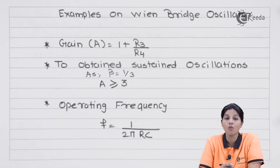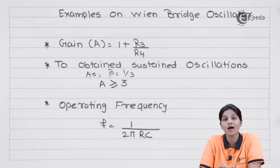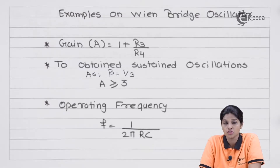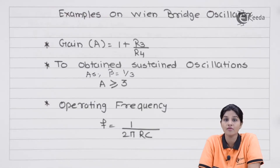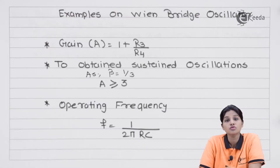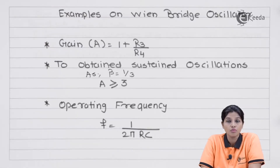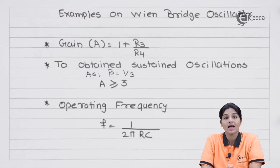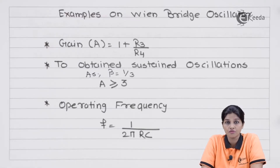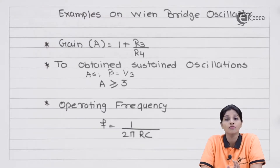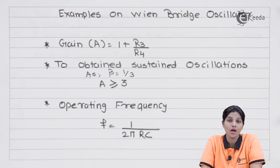The second condition required for sustained oscillation is related to gain. The op-amp is used in non-inverting configuration because the Wien bridge circuit does not introduce any phase shift — the phase shift introduced is equal to 0 degrees. To satisfy Barkhausen's first criteria, the total phase shift around the loop must be 0 or 360 degrees. Since the Wien bridge network introduces no phase shift, an amplifier with 0-degree phase shift is required, hence the non-inverting configuration.